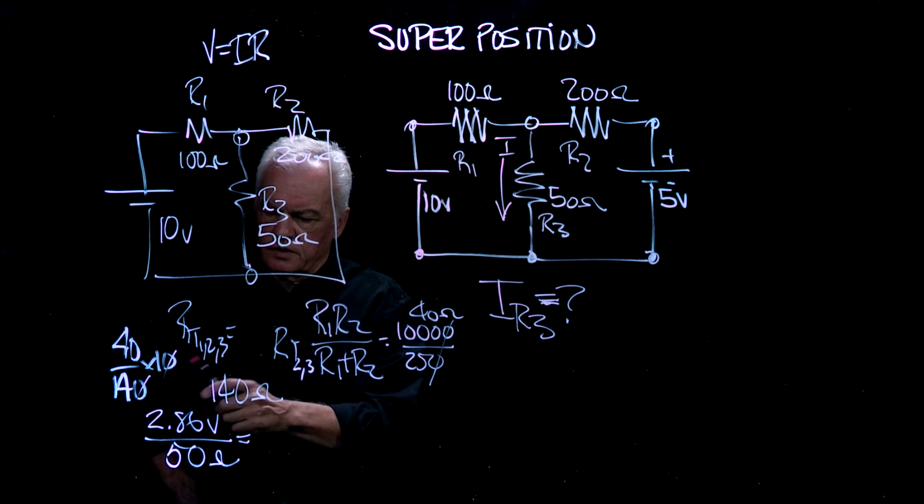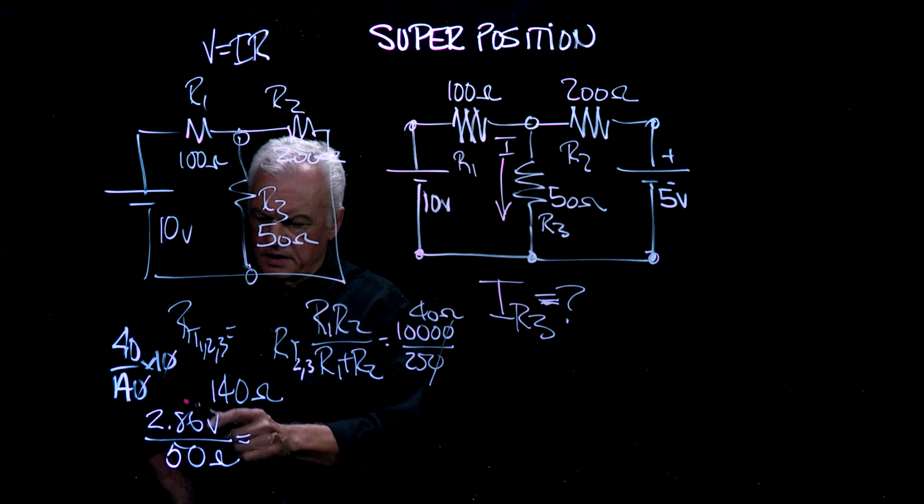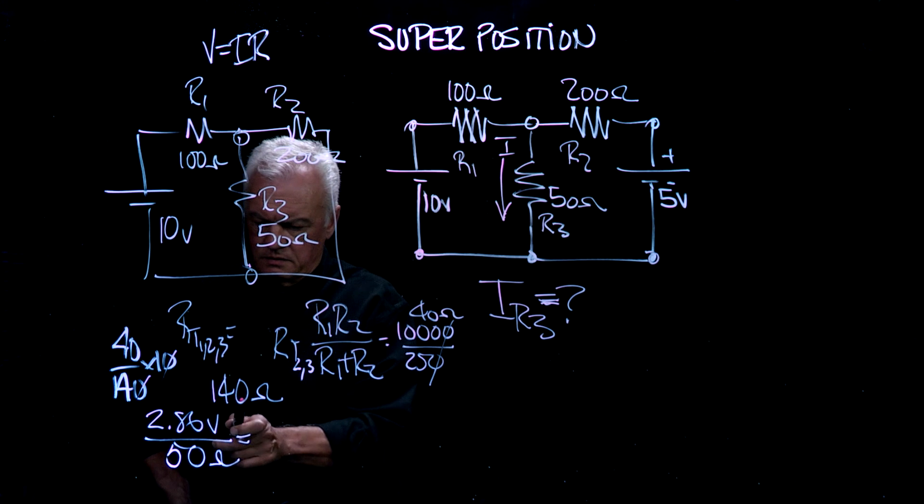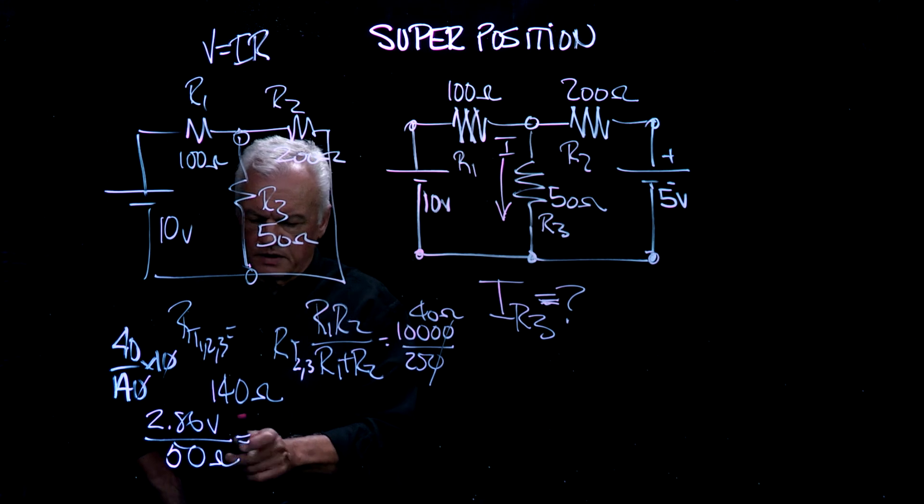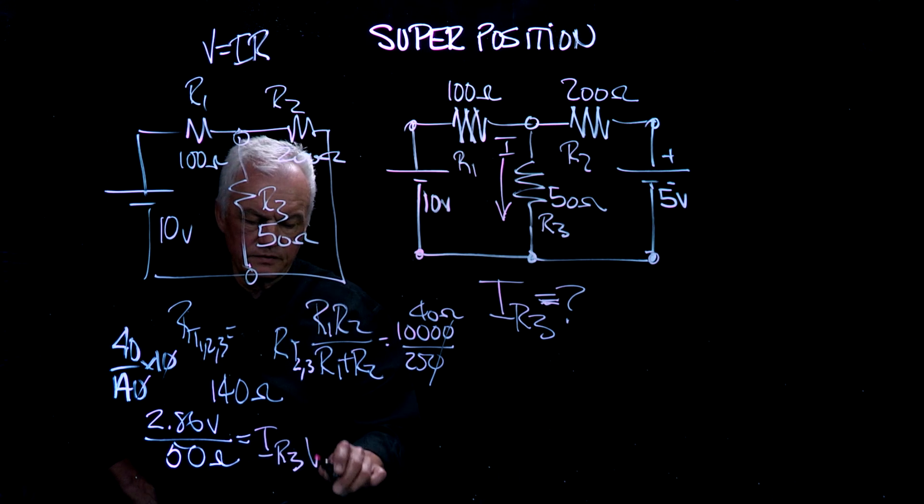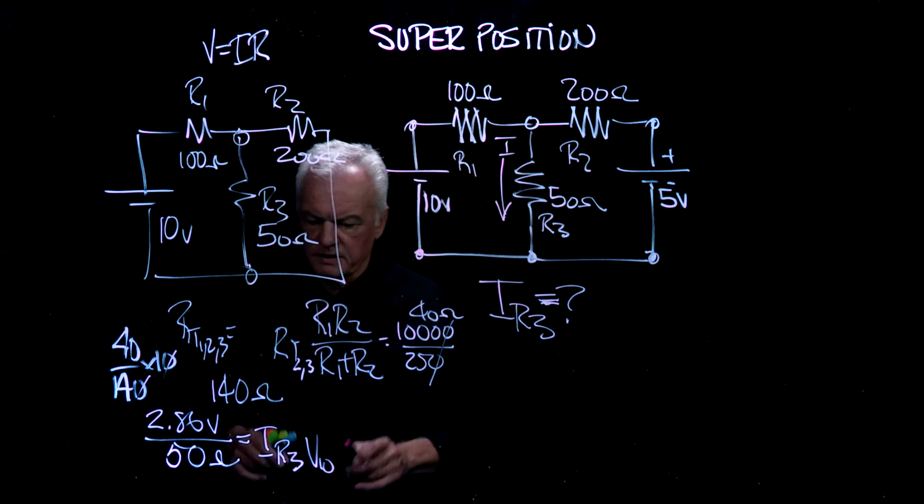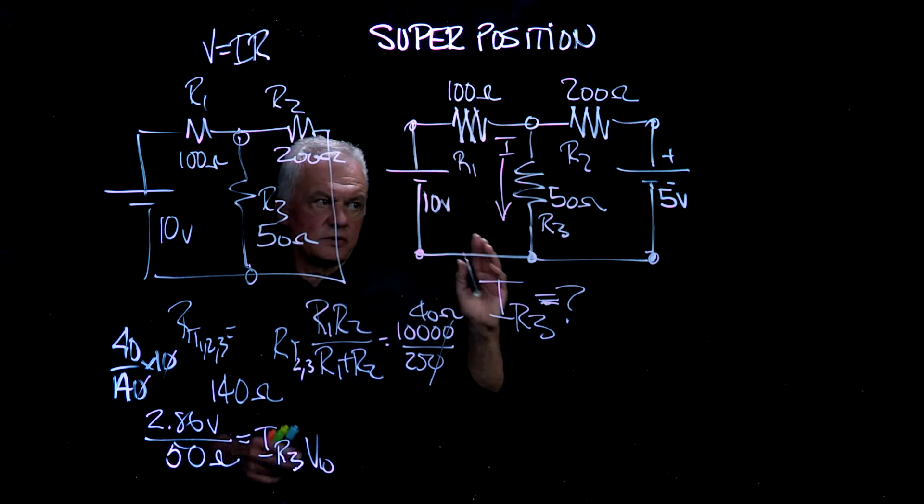So 40 over 140 times 10 will give me my voltage, 2.86 volts, divided by 50 ohms will give my IR3 due to the 10 volts. That's one. So let's just stop there for a second, and I'm going to show you now the contribution from 5 volts.